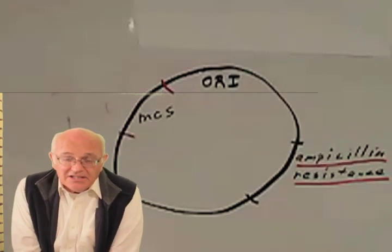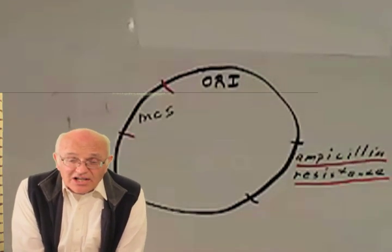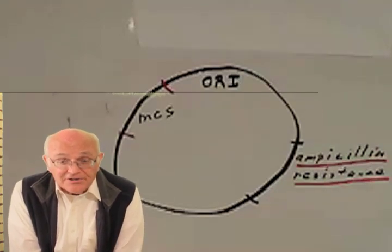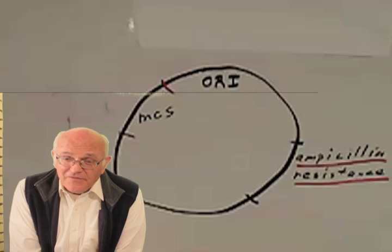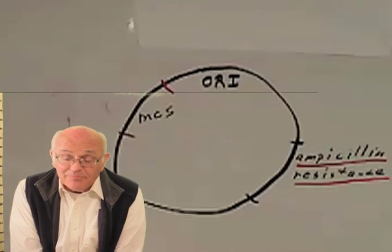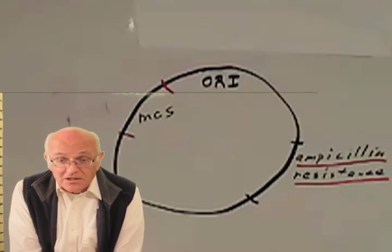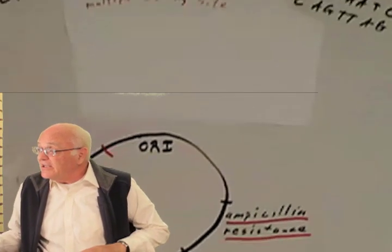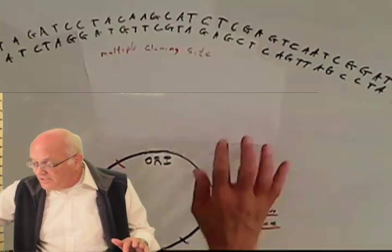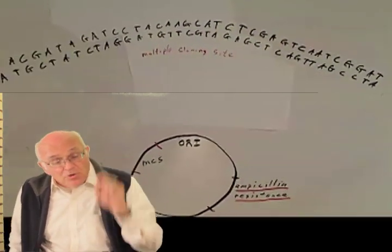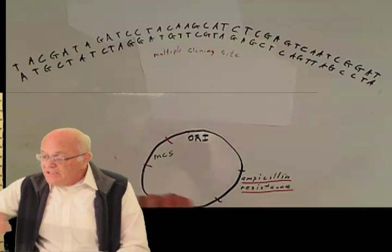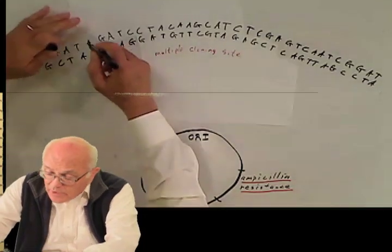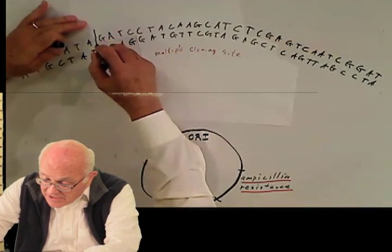The multiple cloning site is a recognition site for pretty much every restriction endonuclease you could ever want. This is a tool that's been manufactured and the people that make these have put restriction sites in for about every restriction enzyme you could ever imagine. Let's take a look at it a little bit more specifically. The multiple cloning site includes a site for a BamHI recognition site. The site is right here.